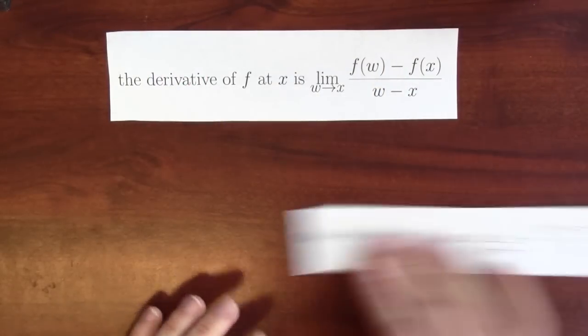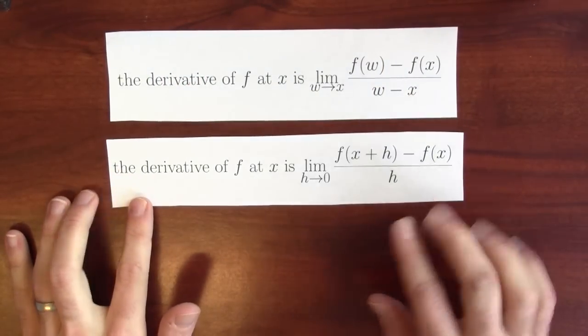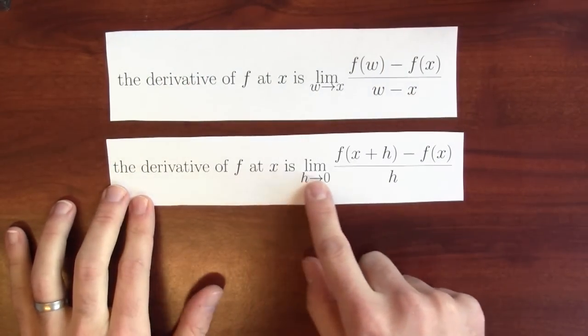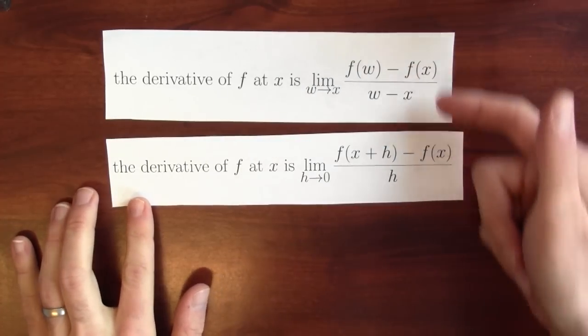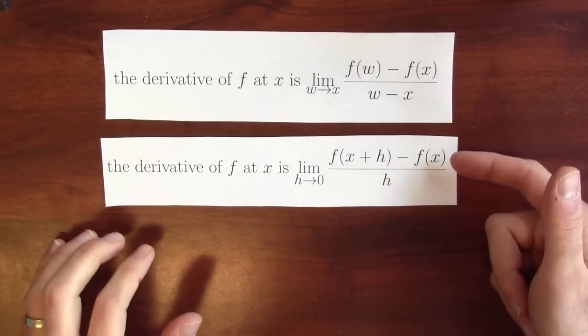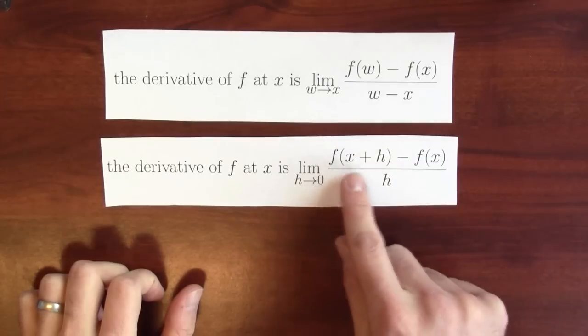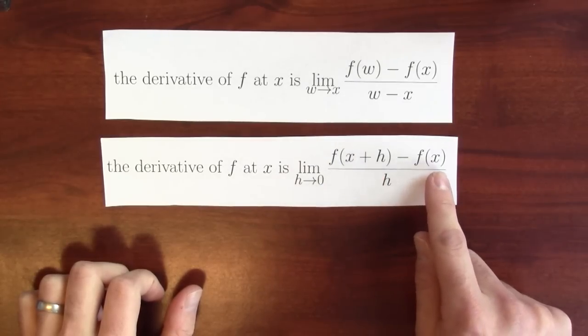Now, how does this definition relate to our original definition of derivative? Well, look, in both cases, the numerators are measuring how the output is changing. Here, I'm plugging in a nearby input, and I'm looking at how much the output changed compared to the output at x.